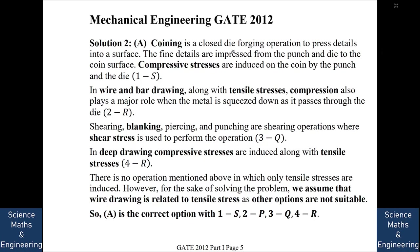Coining is a closed-die forming operation so compressive stresses are induced by means of a punch and a die. In wire drawing, along with tensile stresses, compression also plays a major role when the material is squeezed down — on one side we are pulling the wire and on the other side compression forces act. In blanking, piercing, and punching operations, shear stress performs the operation, so these are called shearing operations.